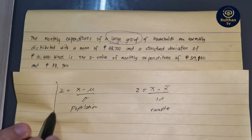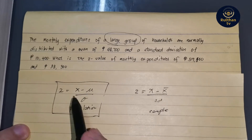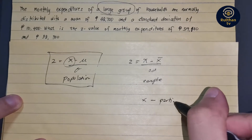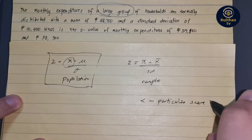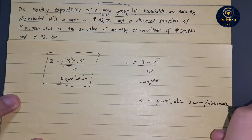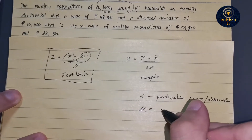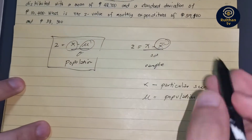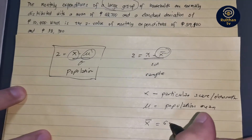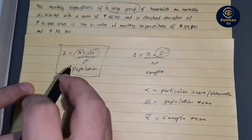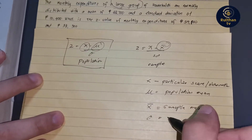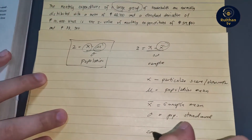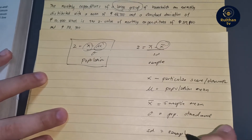Since I mentioned 'large group,' we are going to apply the population formula. Here, x refers to the specific or particular score or observation. Mu (μ) is our population mean, and x-bar is our sample mean. Our denominator sigma (σ) is the population standard deviation, and sd is the sample standard deviation.